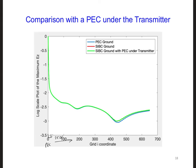And here are the results. We can see that the results for the SIBC everywhere, which is red, along the propagation path versus SIBC everywhere except under the transmitter are identical.